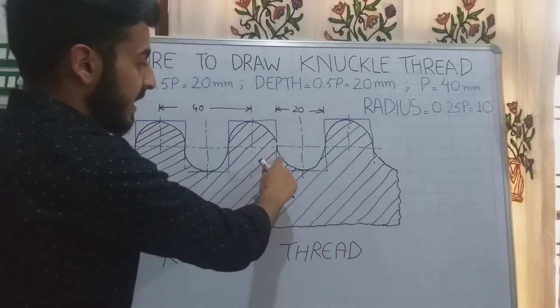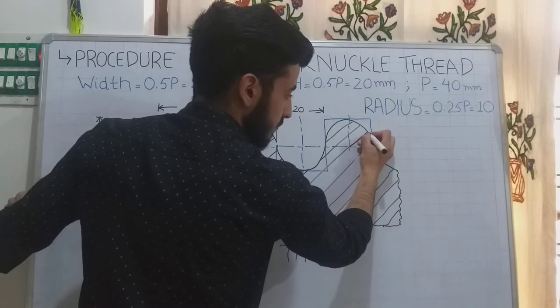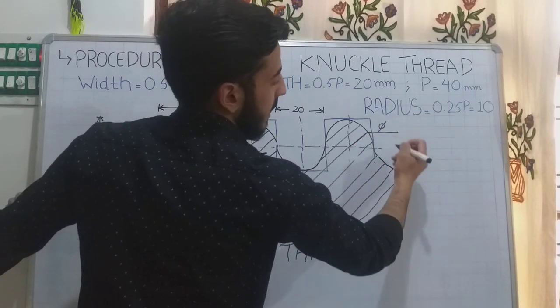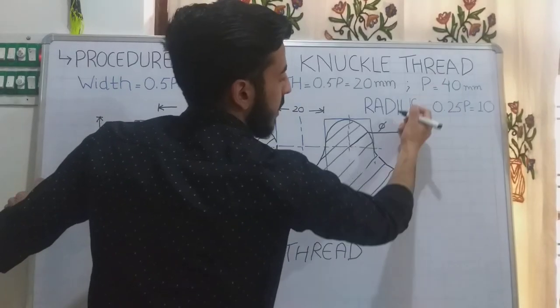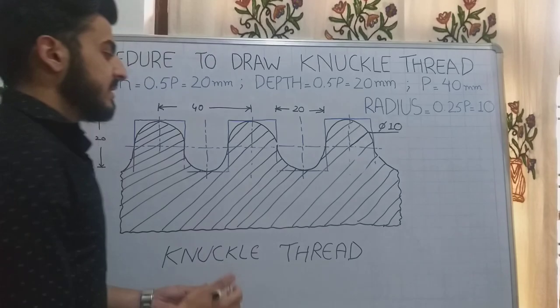And this is the radius. Radius is 0.25p, that is 10mm, if I am taking pitch as 40mm. This is the knuckle thread.